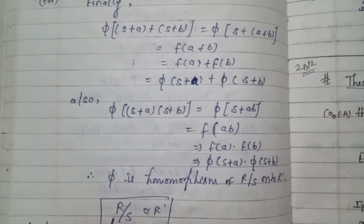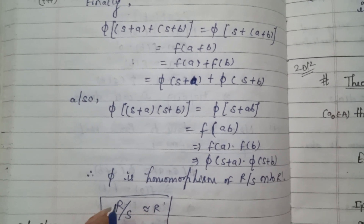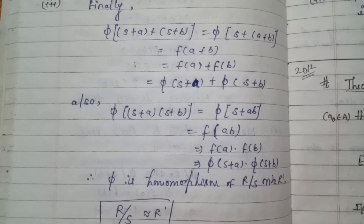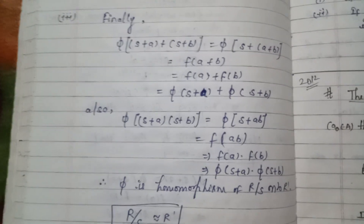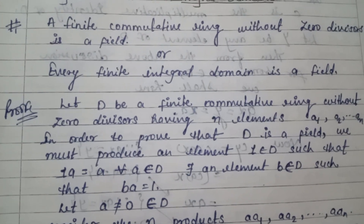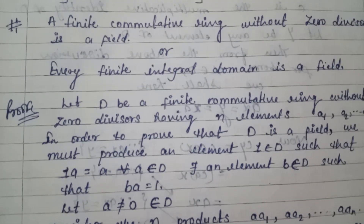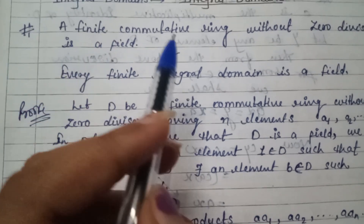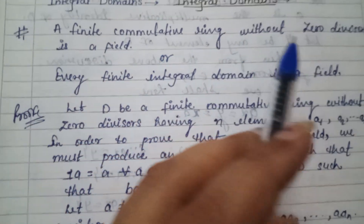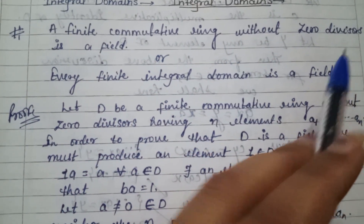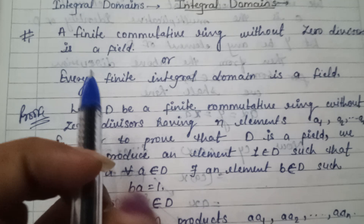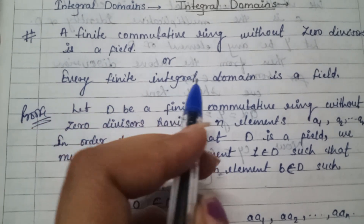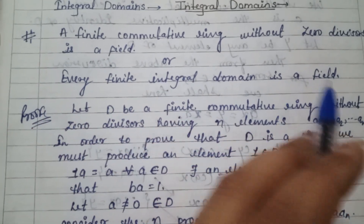Therefore R/S is isomorphic to R', hence proved. The next theorem states: a finite commutative ring without zero divisors is a field, or equivalently, every finite integral domain is a field.